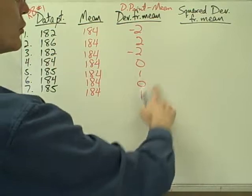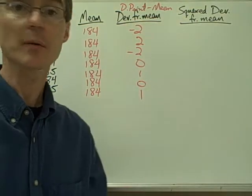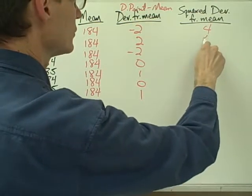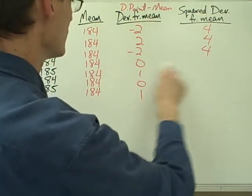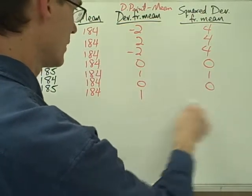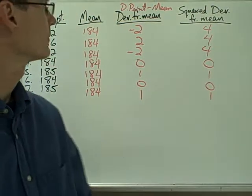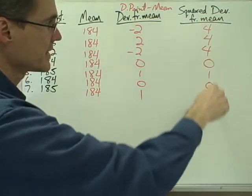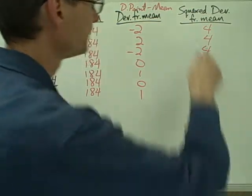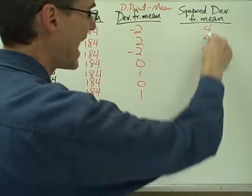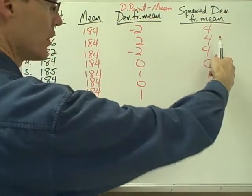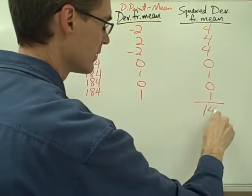Next, I square each deviation from the mean. Negative 2 squared is 4; 2 squared is 4; 2 squared is 4; 1 squared is 1; and 1 squared is 1. Now I have seven values representing the squared deviation from the mean for each data point. I add all of these up: that gives me 14.